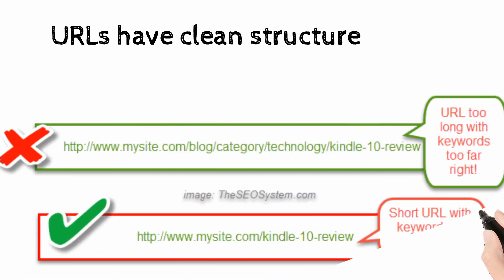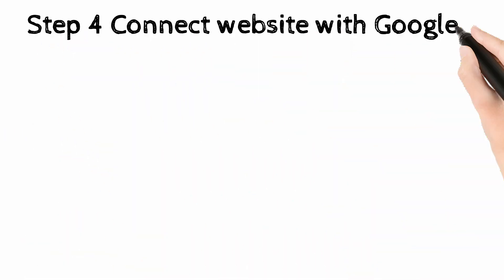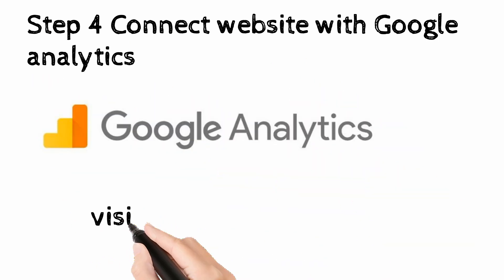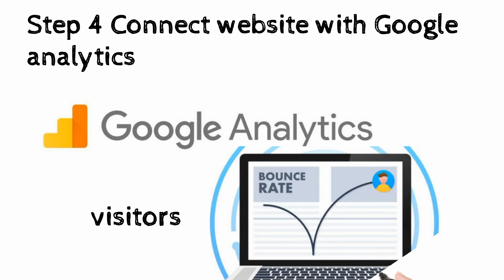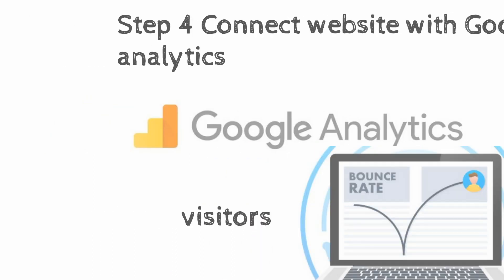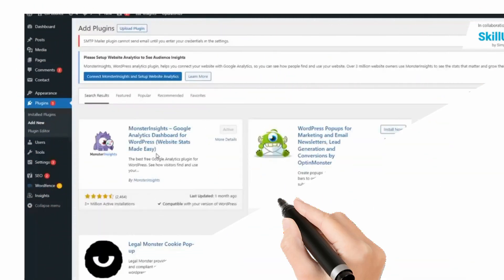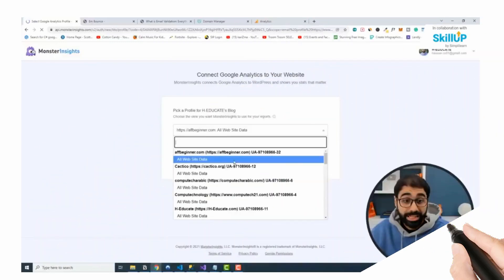Step 4: Connect your website with Google Analytics. Google Analytics is a free service from Google which helps you track your page visitors and bounce rate. Go to the dashboard of your WordPress website, in plugin options click on add a plugin and search for MonsterInsights. Download and activate this plugin — it will automatically connect your site to Google Analytics, but before that you need to create your website in Google Analytics.